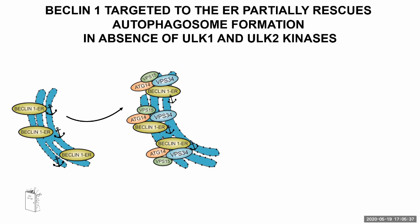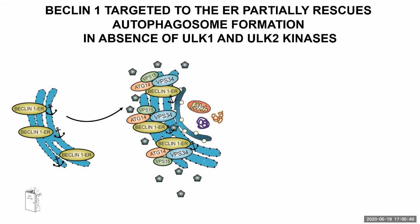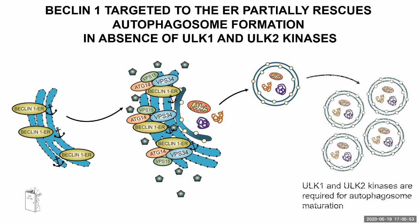Force-targeting Beclin-1 to the ER was able to start inducing autophagosome formation. The autophagosomes formed in this condition — in the absence of the ULK kinases — were normal-looking autophagic structures, but they were not able to mature and fuse with the lysosome, thus suggesting that ULK1 and ULK2 kinases are required for autophagosome maturation.